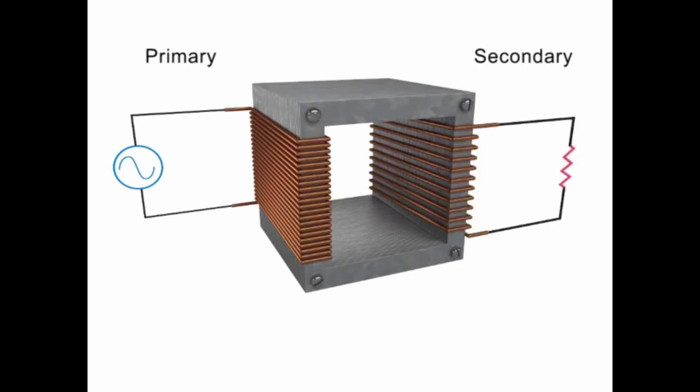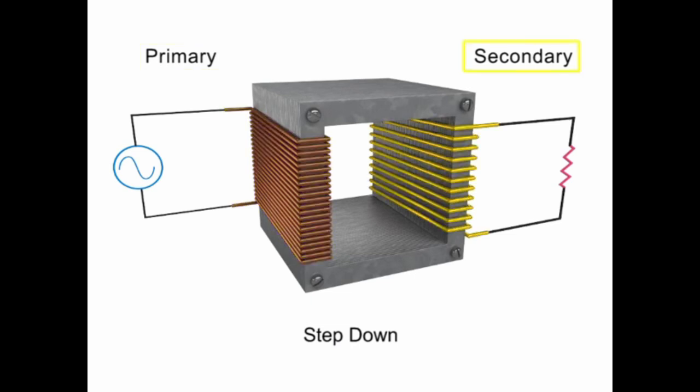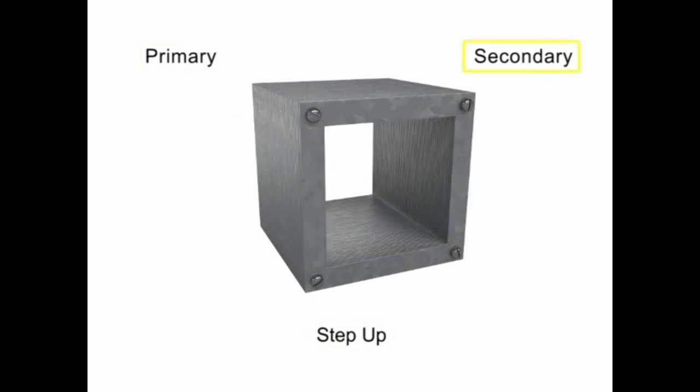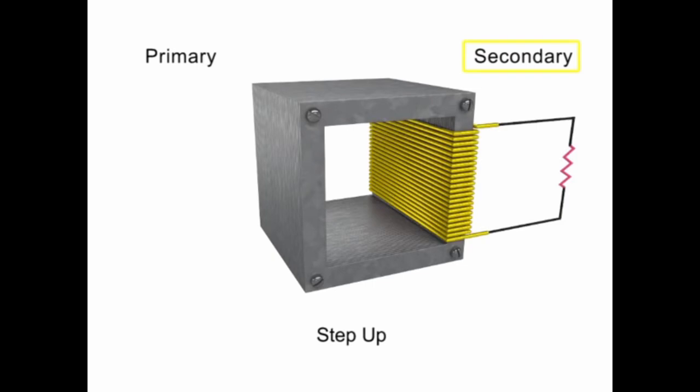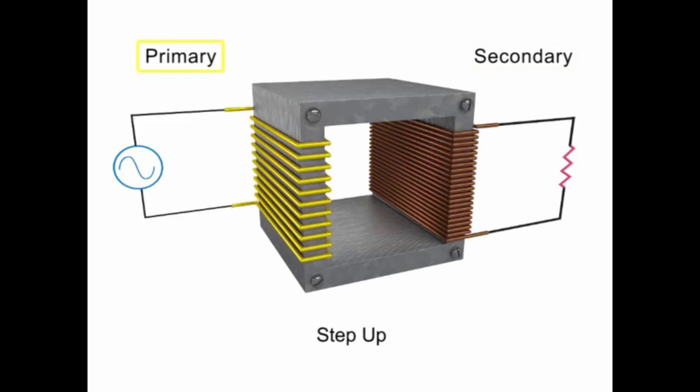There are two types of transformers: step-down and step-up. In a step-down transformer, the number of turns in the primary coil are more than the number of turns in the secondary coil. In a step-up transformer, the number of turns in the primary coil are less than the number of turns in the secondary coil.